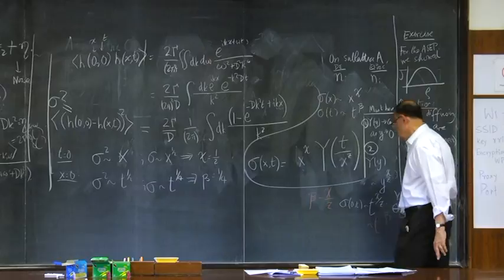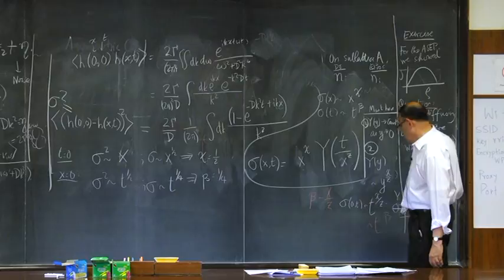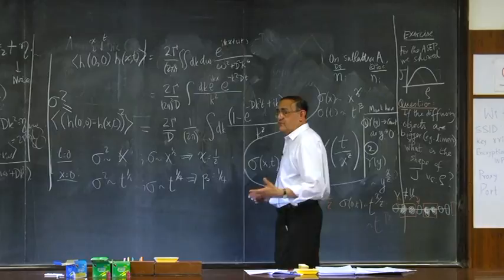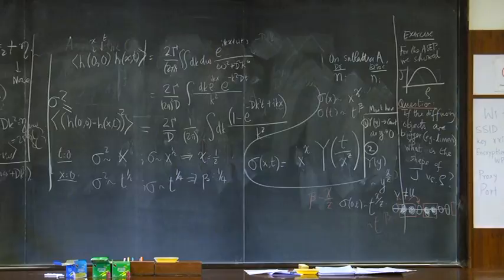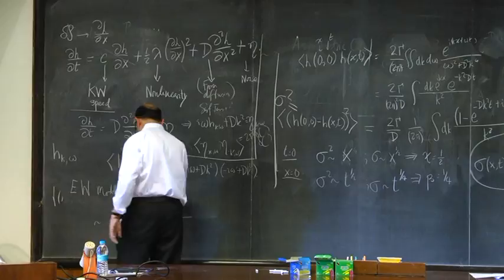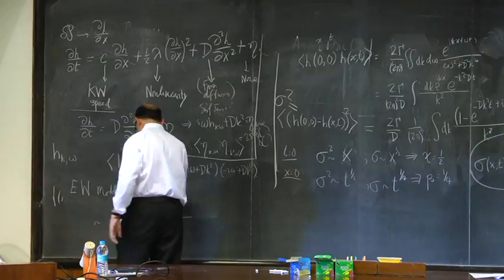Here is the complete set of exponents for the Edwards-Wilkinson model: chi equals one-half, beta equals one-quarter, and z equals 2 (since z equals chi/beta = (1/2)/(1/4) = 2).